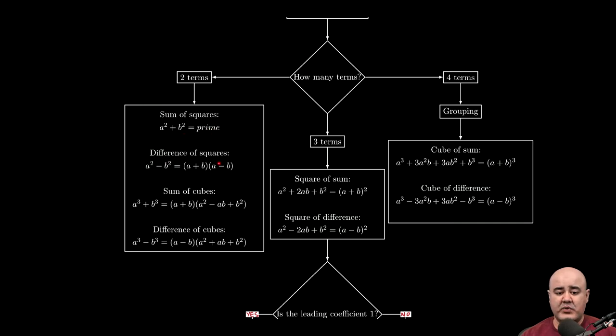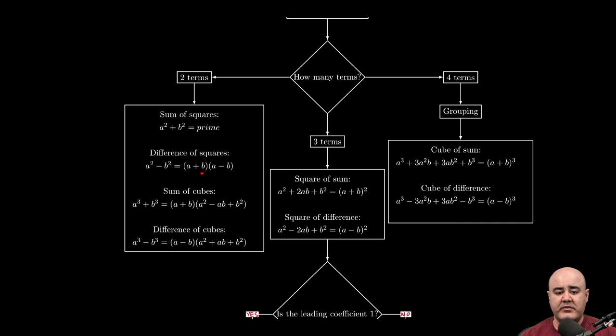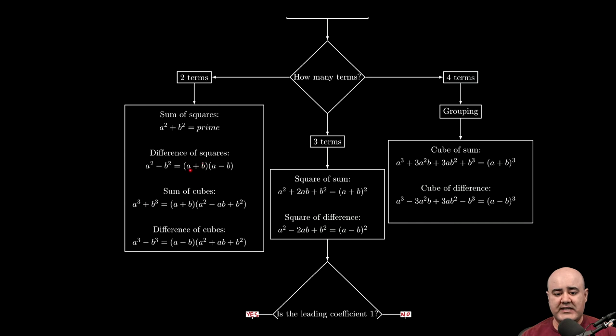A difference of squares, on the other hand, a² - b², so some quantity squared minus some other quantity squared, can be factored into (a + b) times (a - b). So you take the square root of a², that gives you a. You take the square root of b², that gives you b. One binomial with a plus, one binomial with a minus.